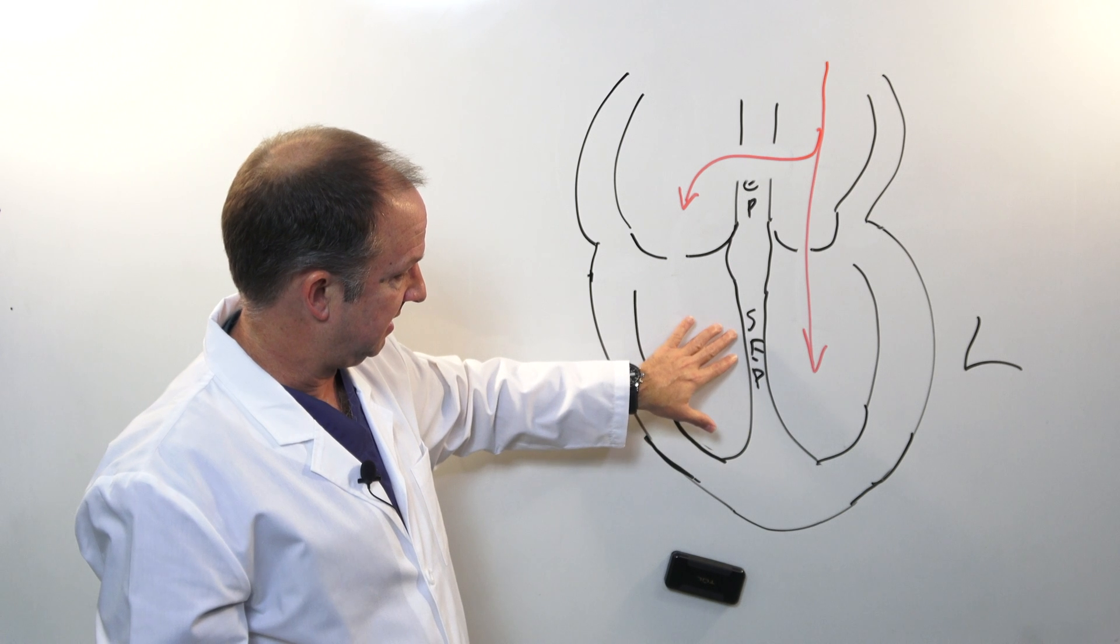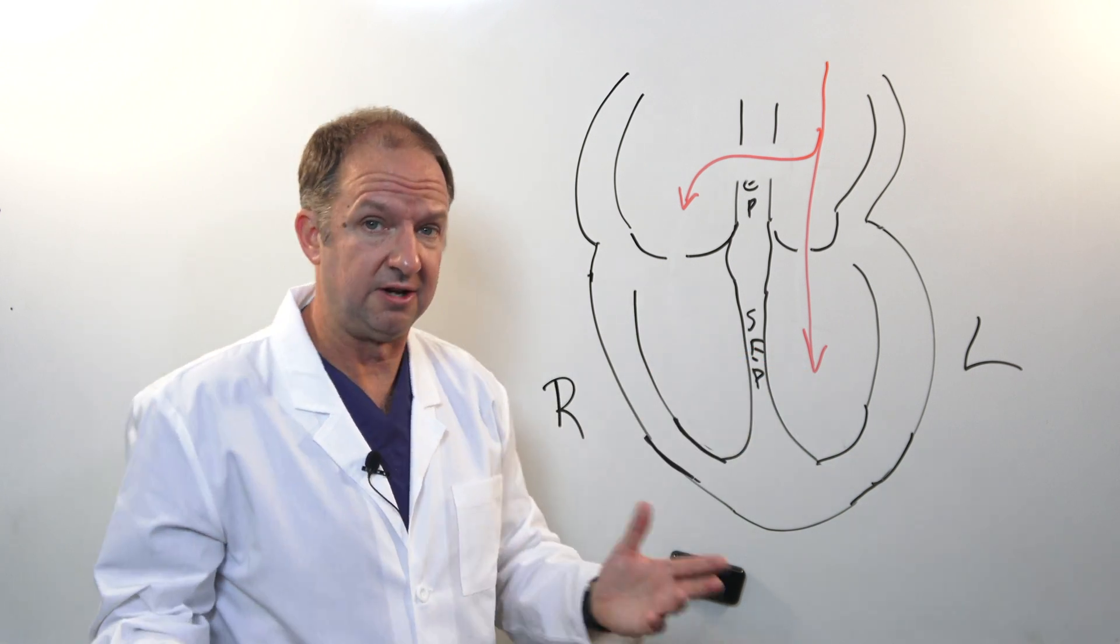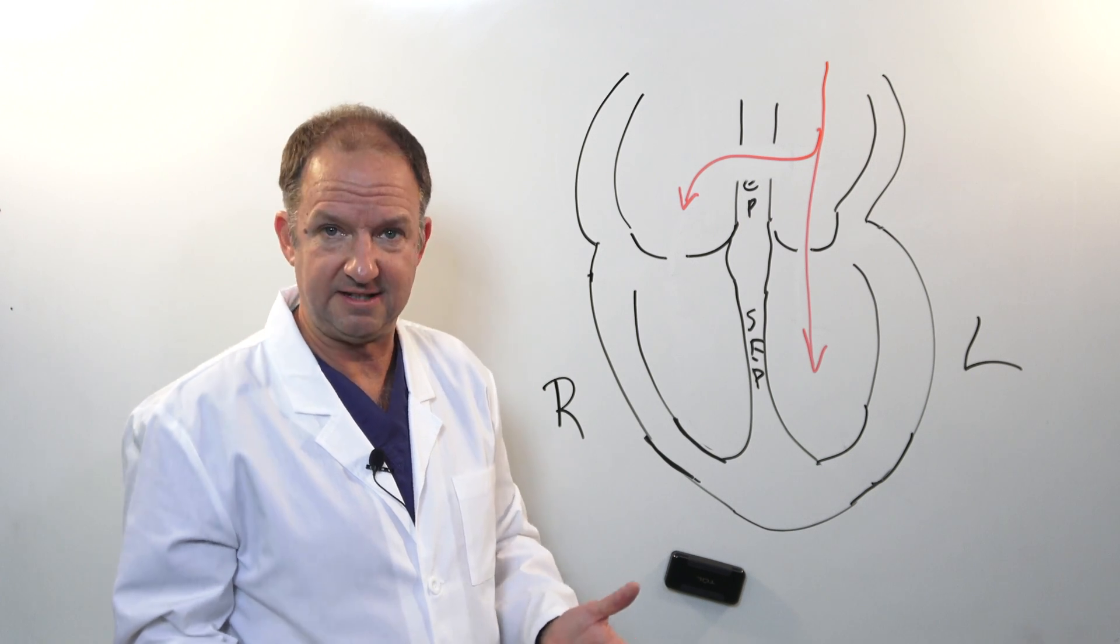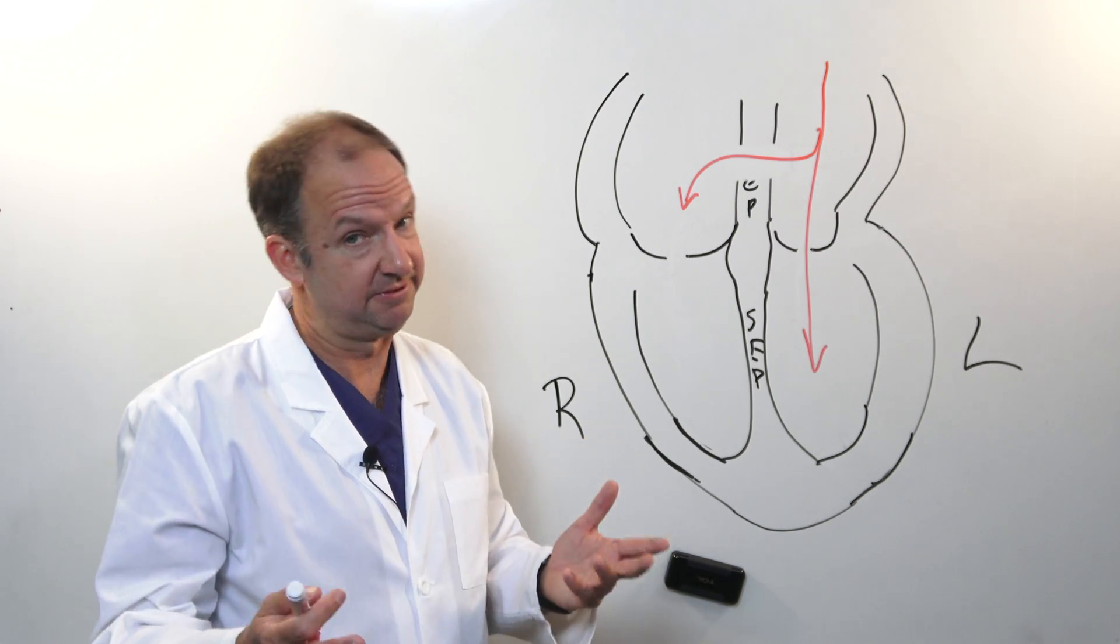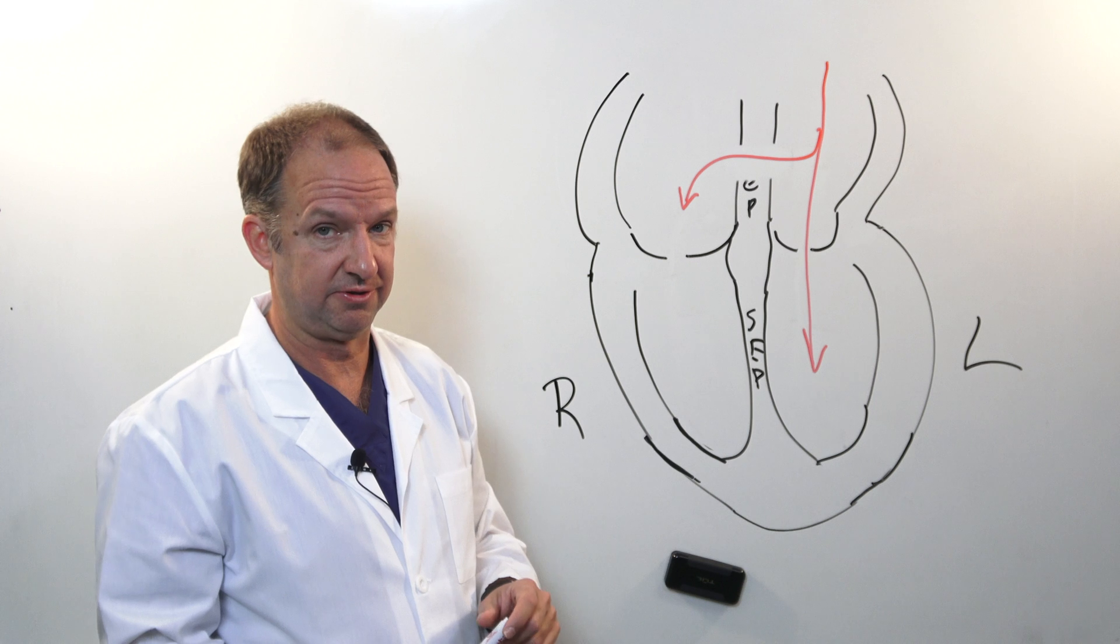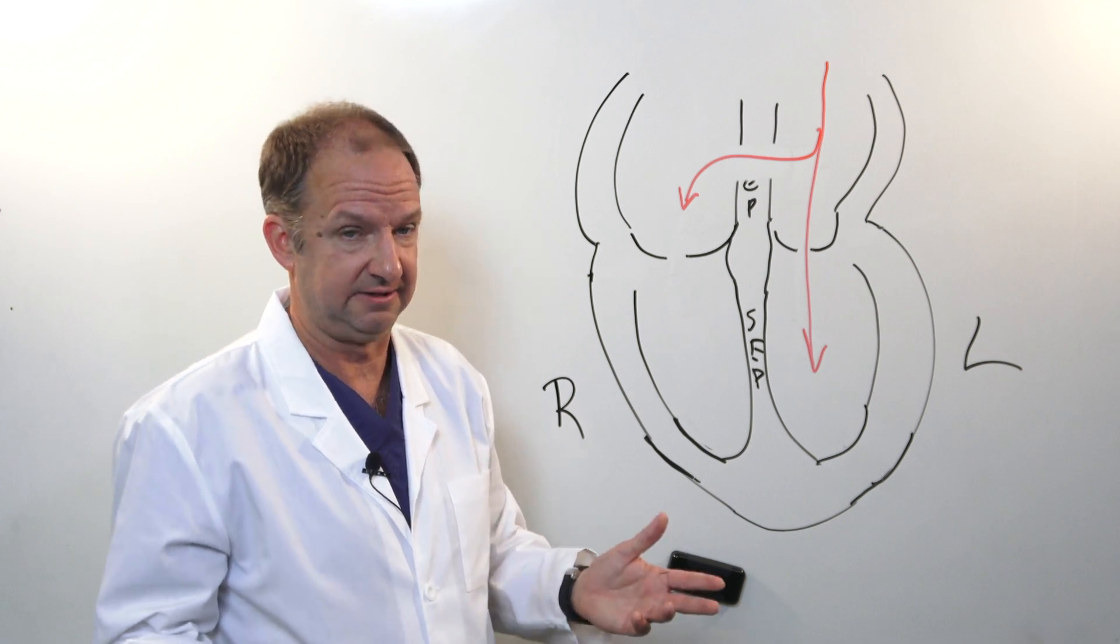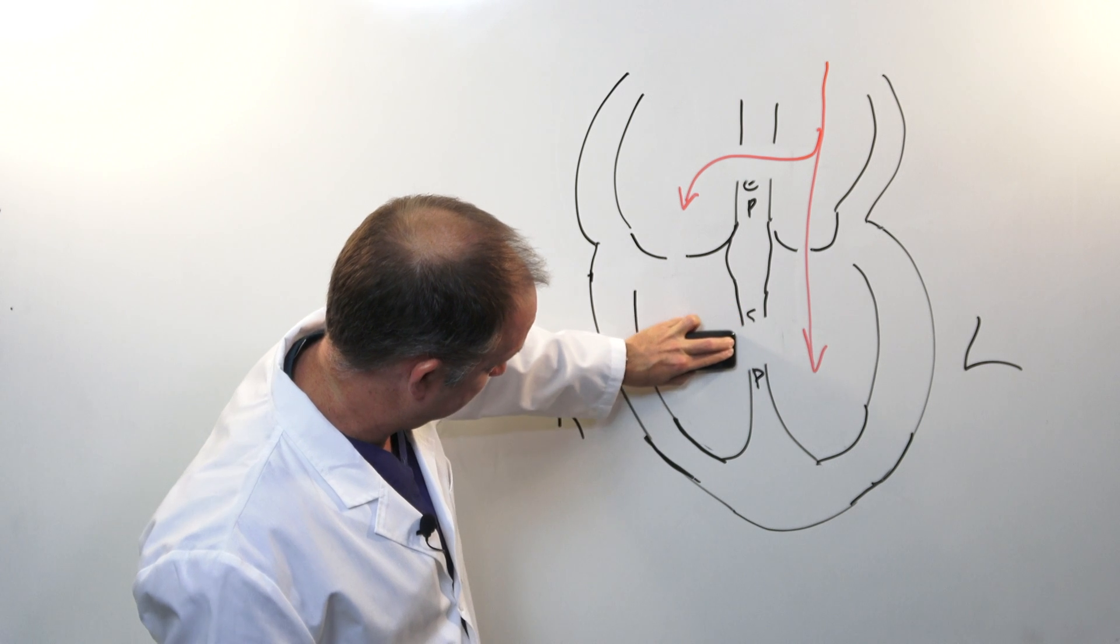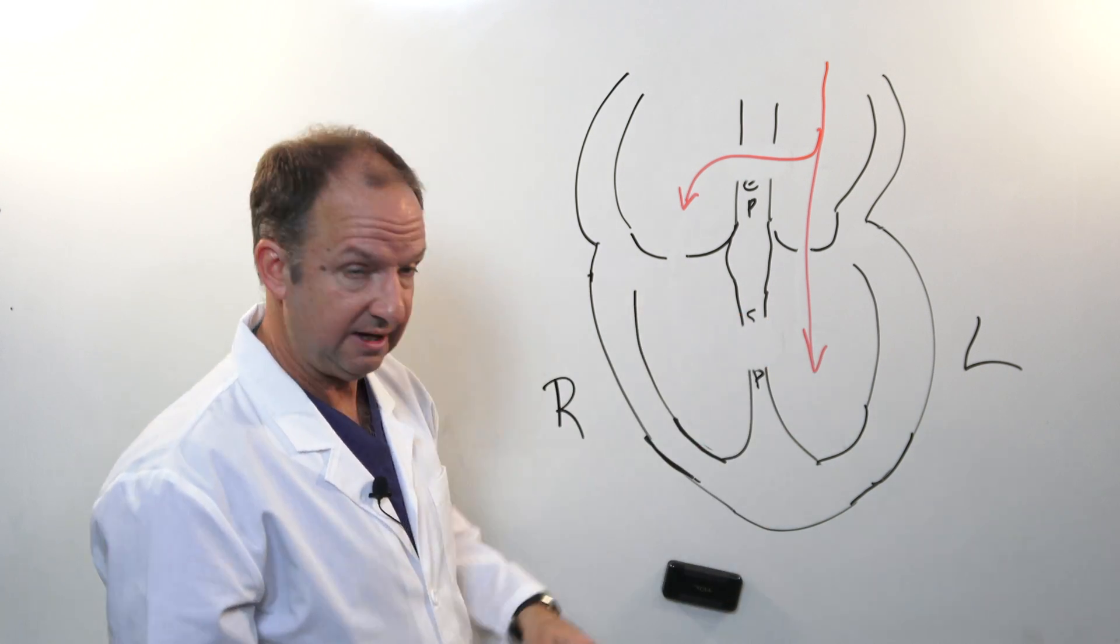Now on the ventricular side of things we can also have defects and those are called ventricular septal defects or VSDs. So what happens, and you can imagine already using the atrial septal defect or the ASD as a comparison, if you develop a hole or a perforation in that wall,